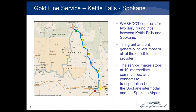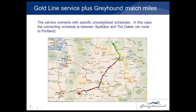Here we have a subsidized service between Kettle Falls and Spokane, making about 10 intermediate communities and connecting to transportation hubs at the Spokane Intermodal and the Spokane Airport. The service connects with specific unsubsidized schedules — in this case, the connecting schedule is between Spokane and The Dalles en route to Portland. The subsidized service connects with two Greyhound schedules: 69-11 and 69-12, which is the round trip between Spokane and The Dalles.